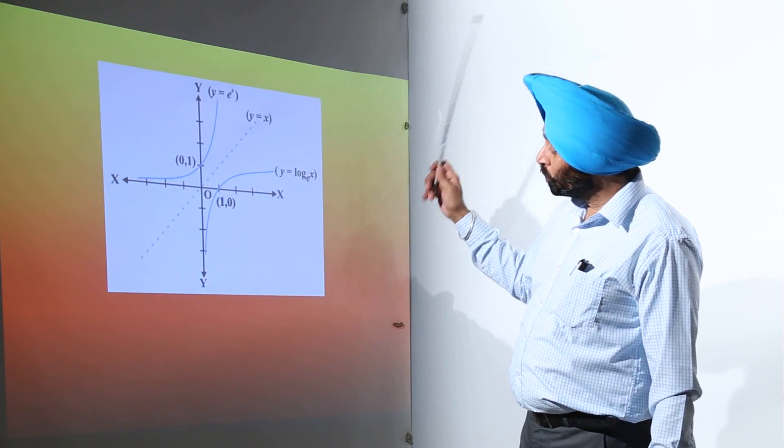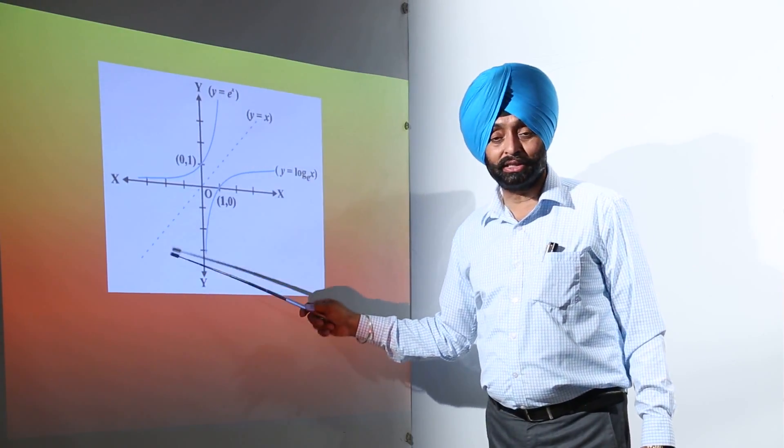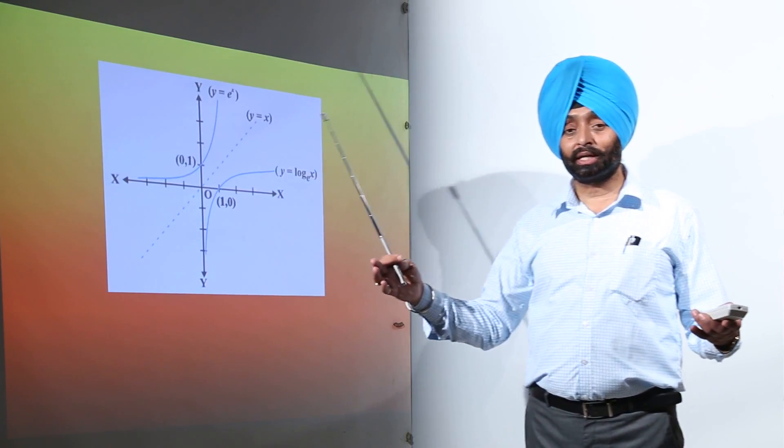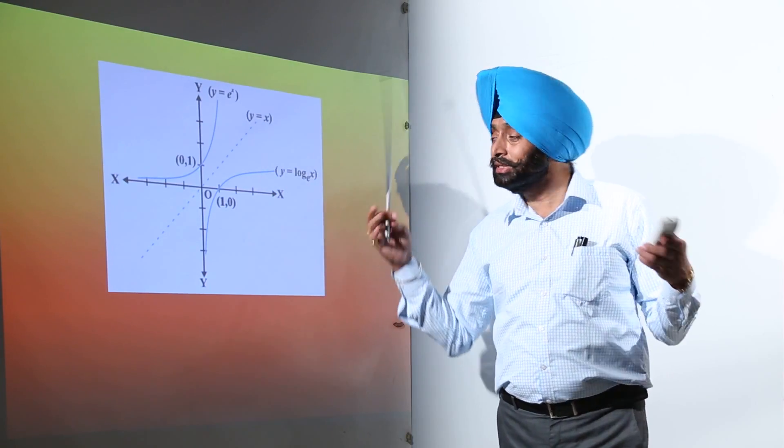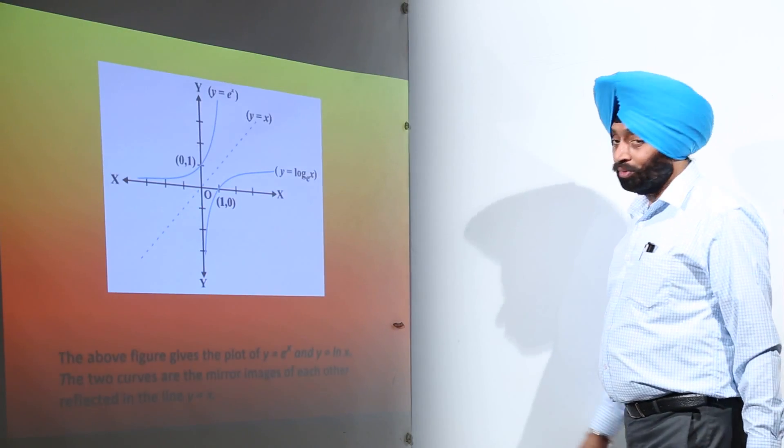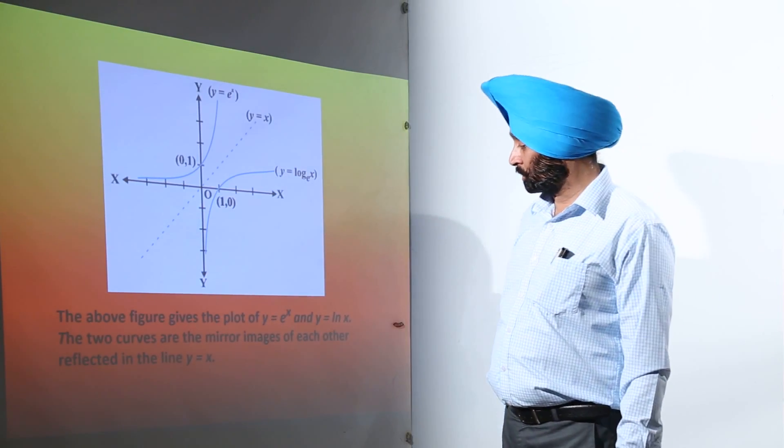What this shows: if this line acts as a mirror, then we can say these are exactly mirror images of each other. That is why we say exponential and logarithm are mirror images of each other.